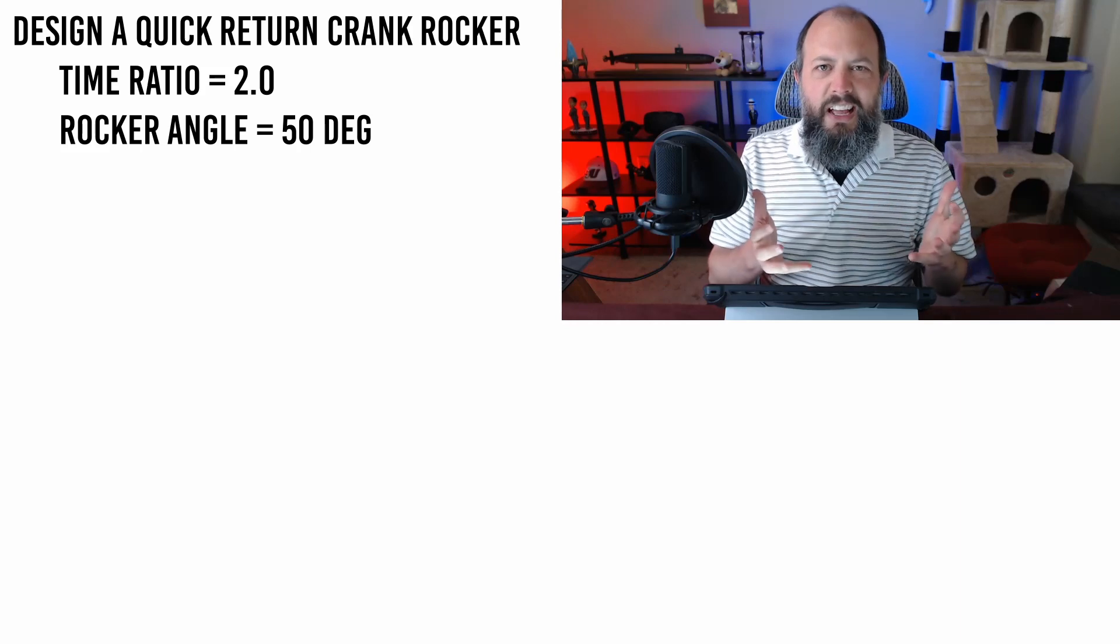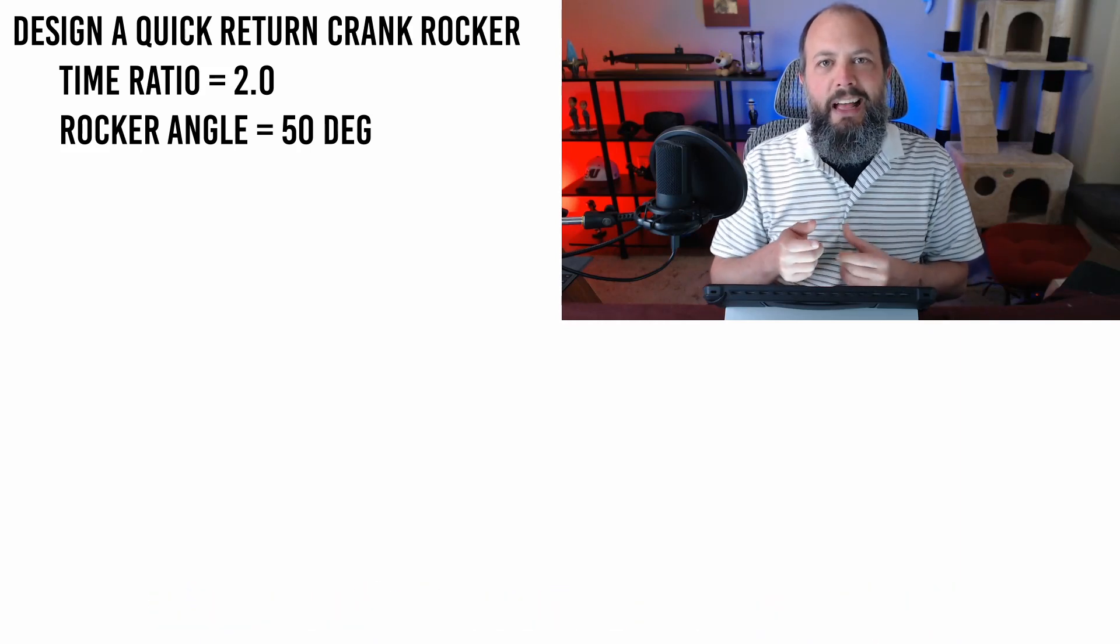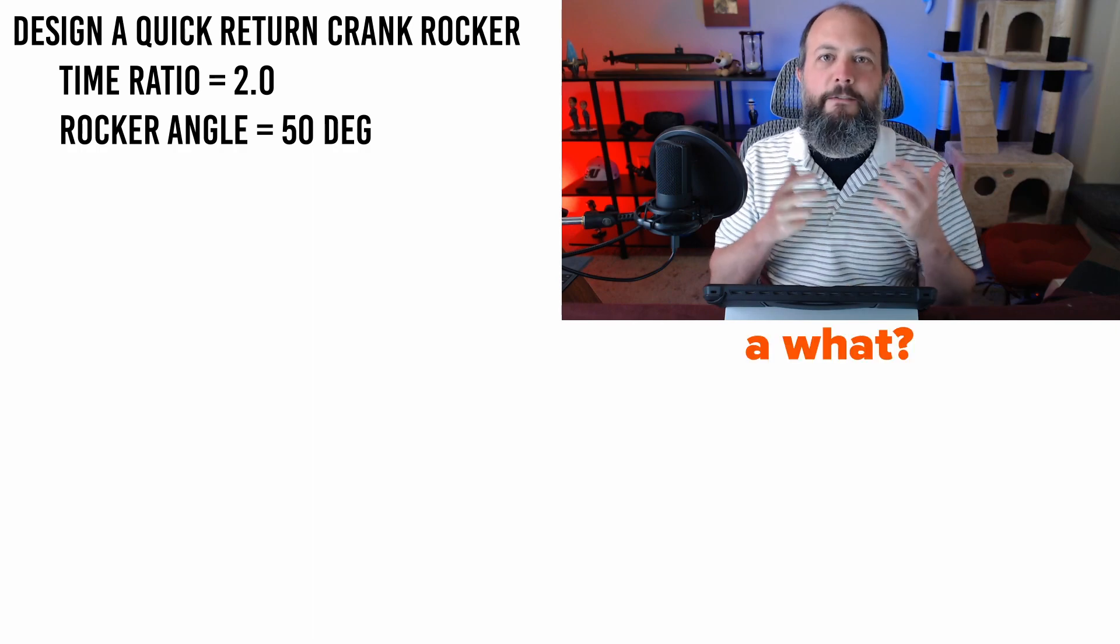The purpose of a quick return mechanism is to break the symmetry. So you can get a really long and powerful push stroke in one direction, and a really short and easy return stroke back in the other direction to reset itself, so you can get a good powerful long stroke again on the next cycle. So you decide based on the ergonomics that you want a quick return time ratio of 2.0 and a crank rocker angle of 50 degrees.